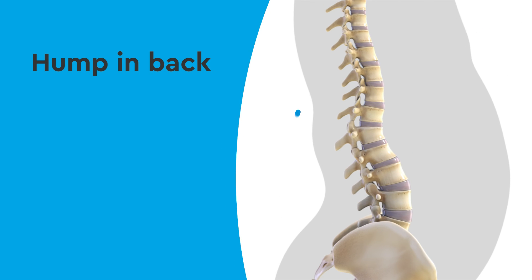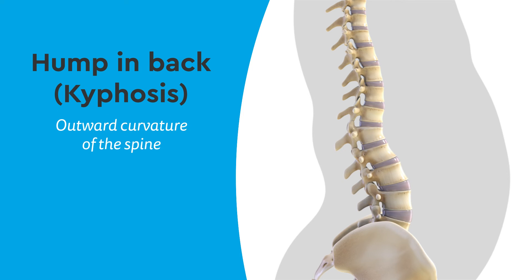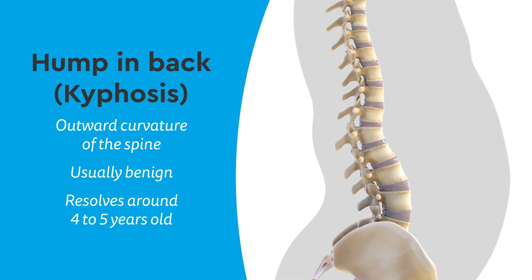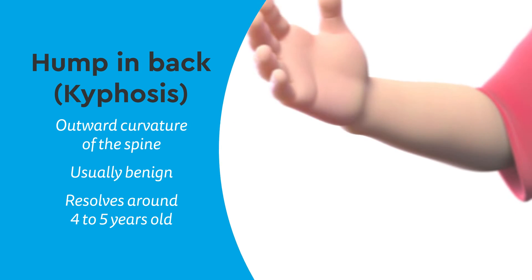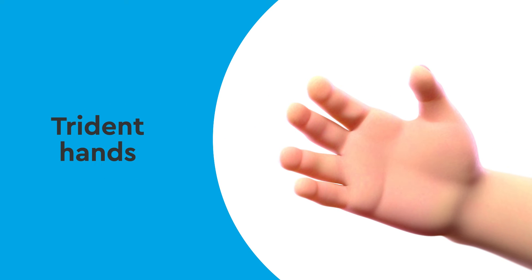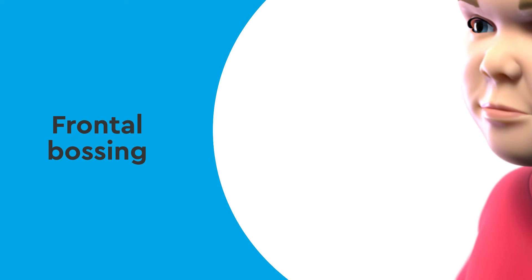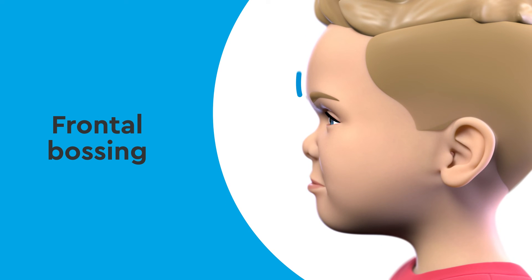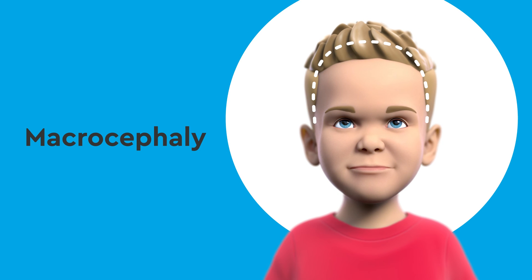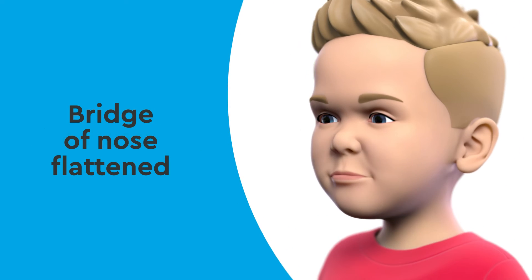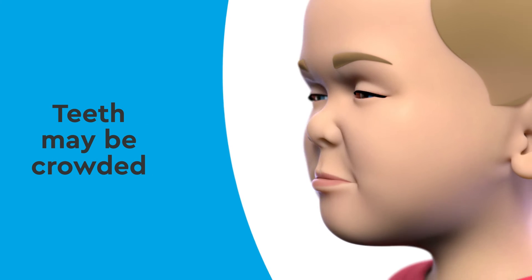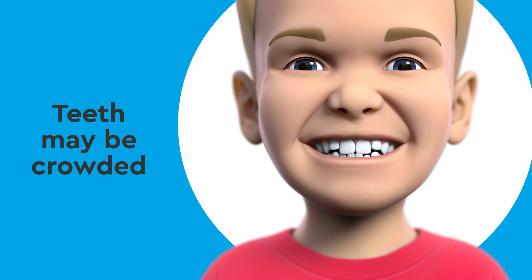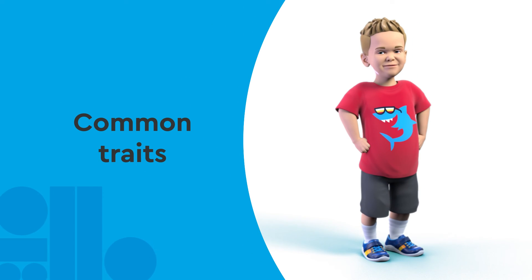In the back, many people have a hump, usually right below the ribcage. This is called kyphosis, which is due to an outward curvature of the spine. The vast majority of cases of kyphosis are benign and resolved by the age of 4 or 5 years. In the hands, there may be extra space between the fingers, sometimes called trident hands. The forehead may be slightly larger, called frontal bossing. The head may be enlarged, called macrocephaly. The bridge of the nose may be flattened, and teeth can become crowded. These are the common, normal traits of people with achondroplasia.